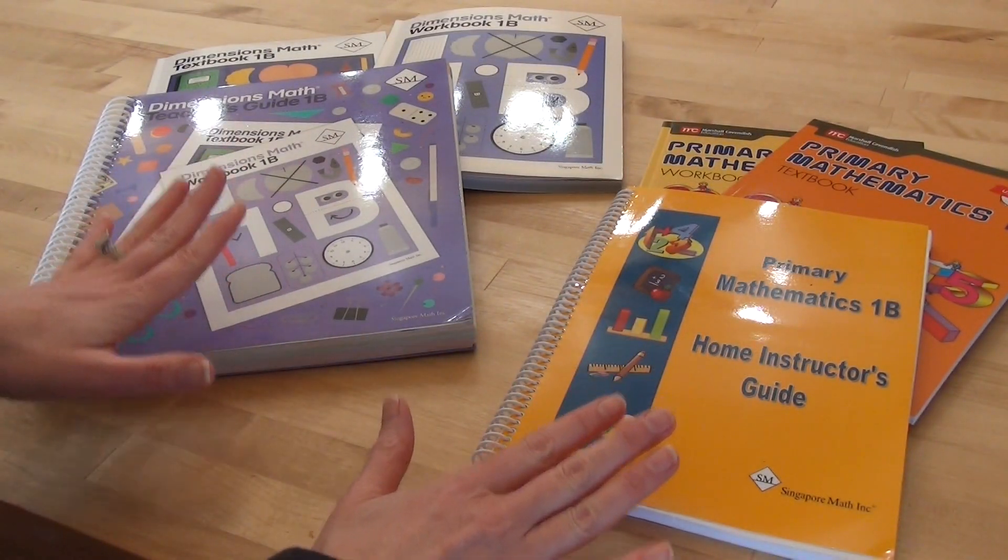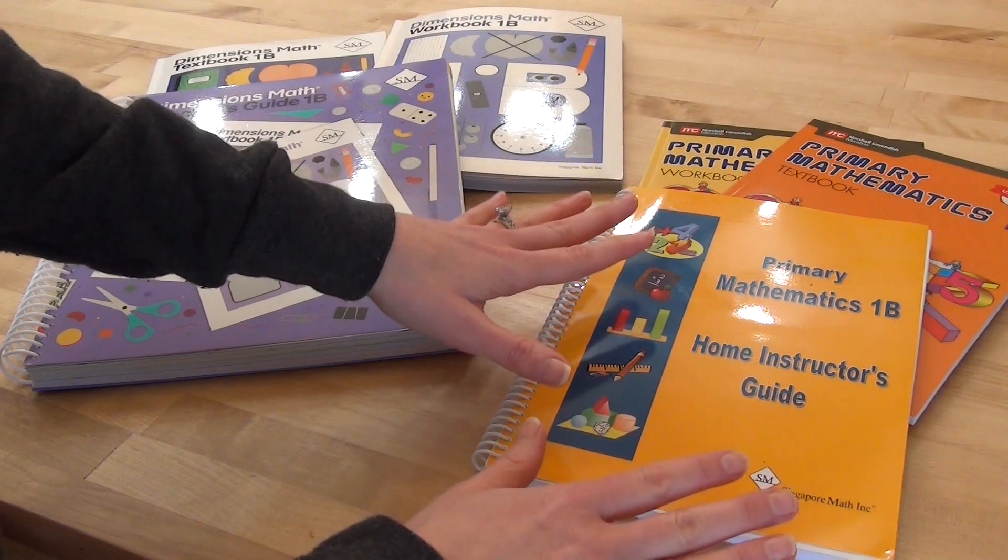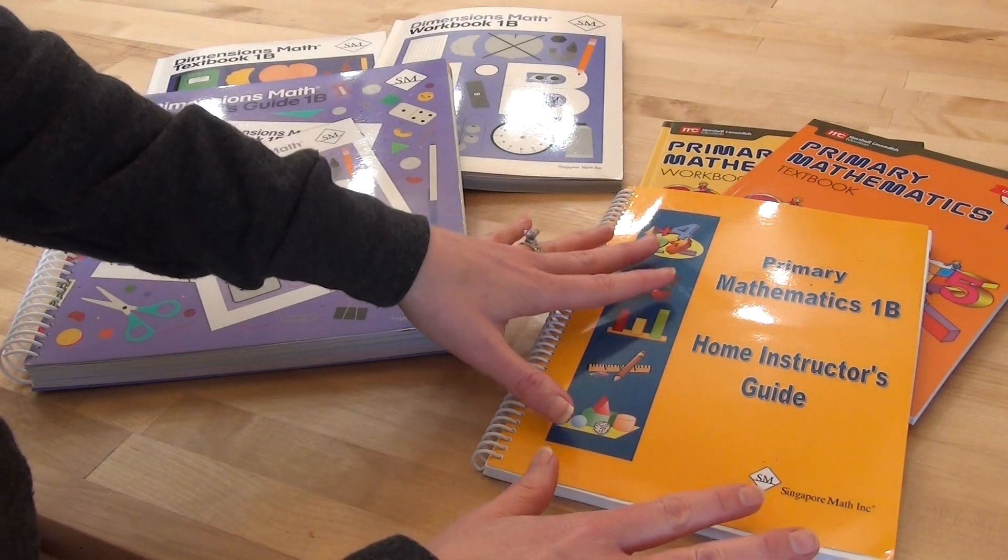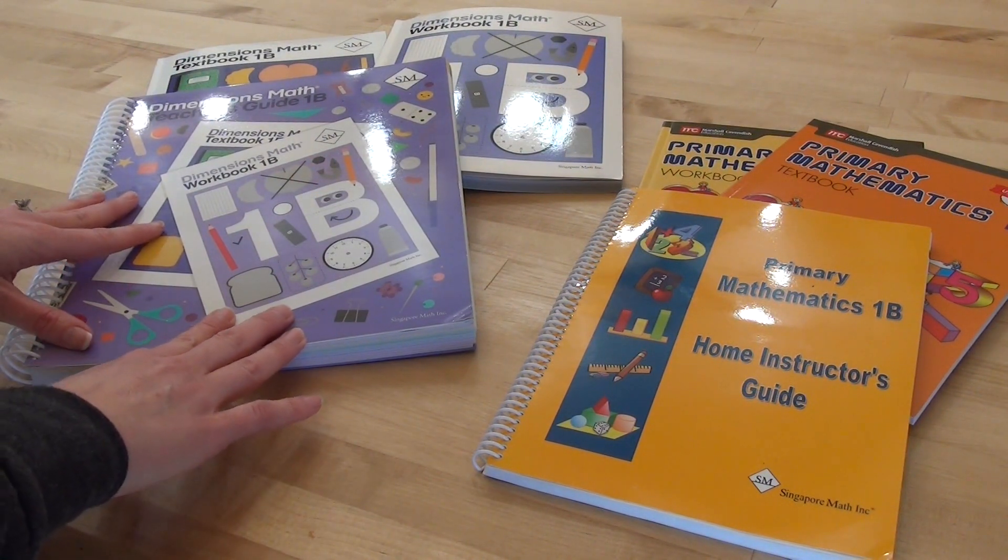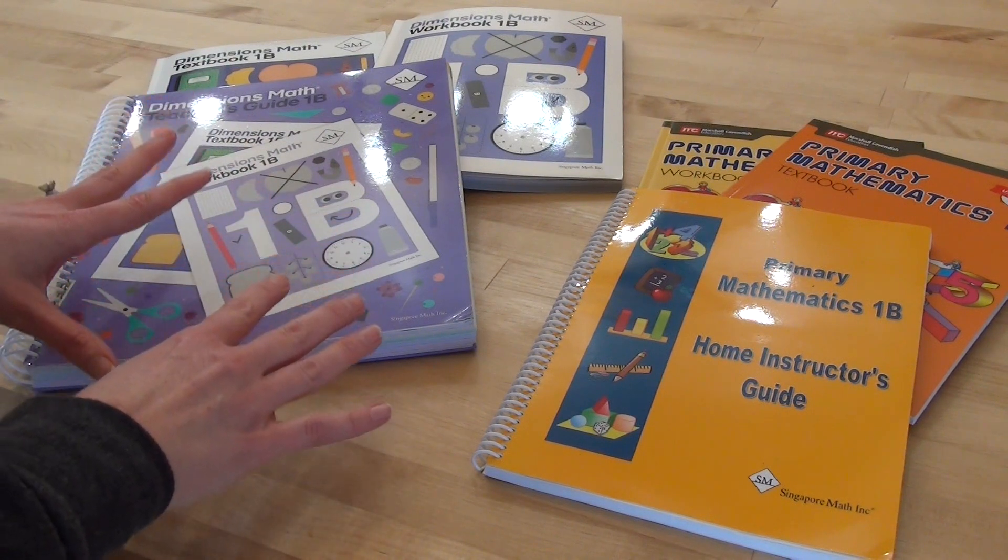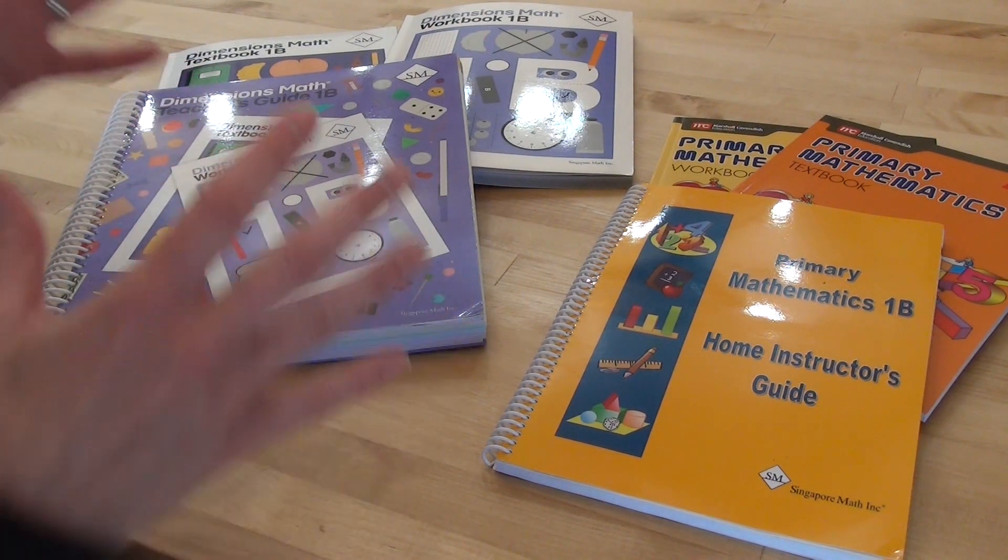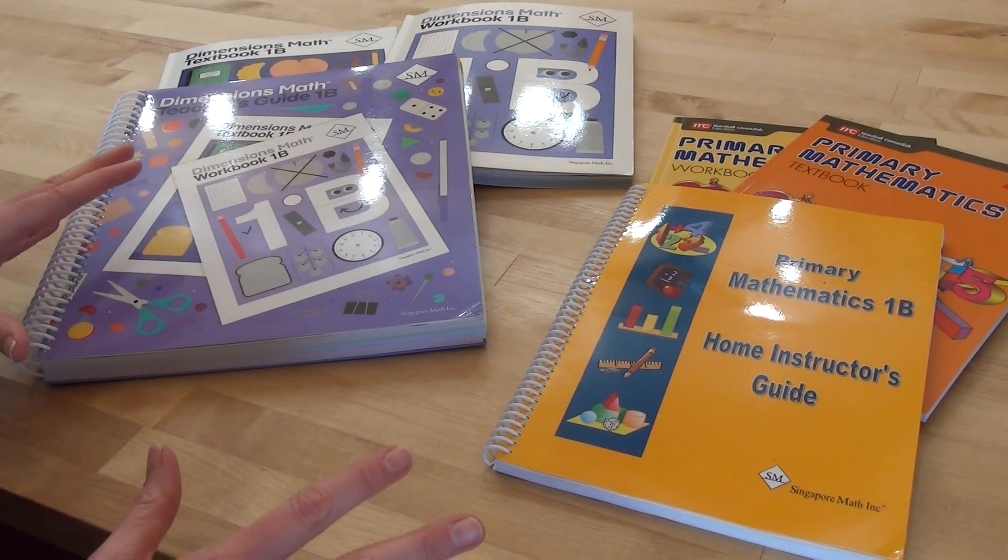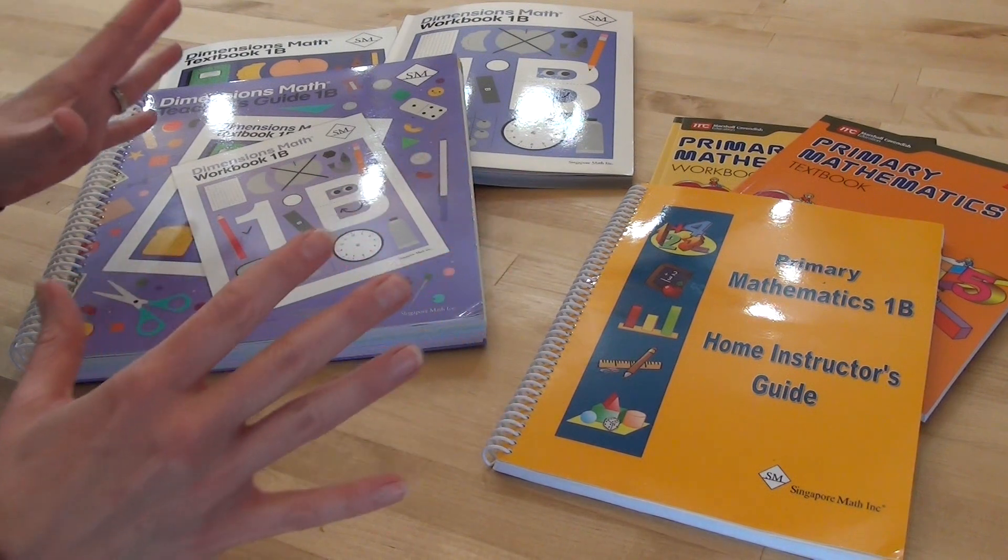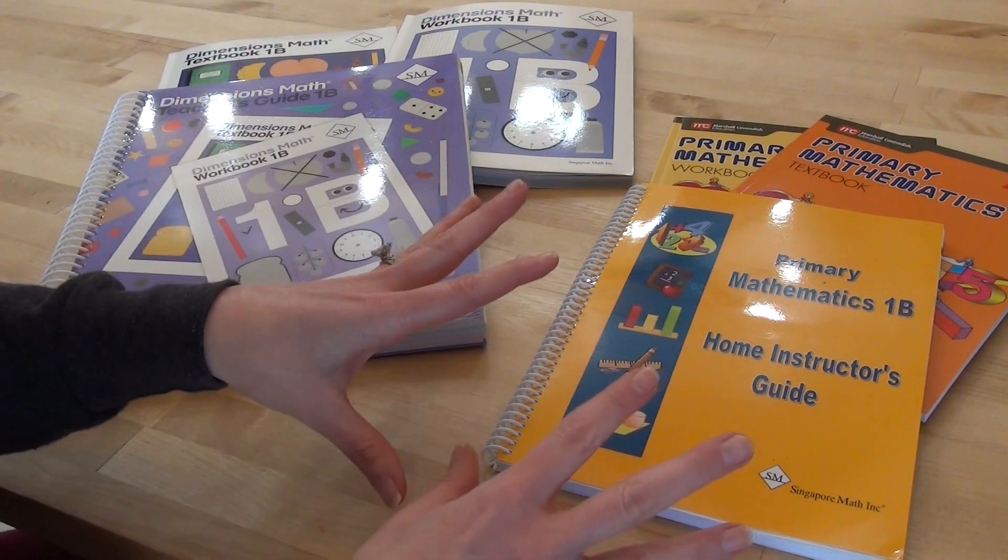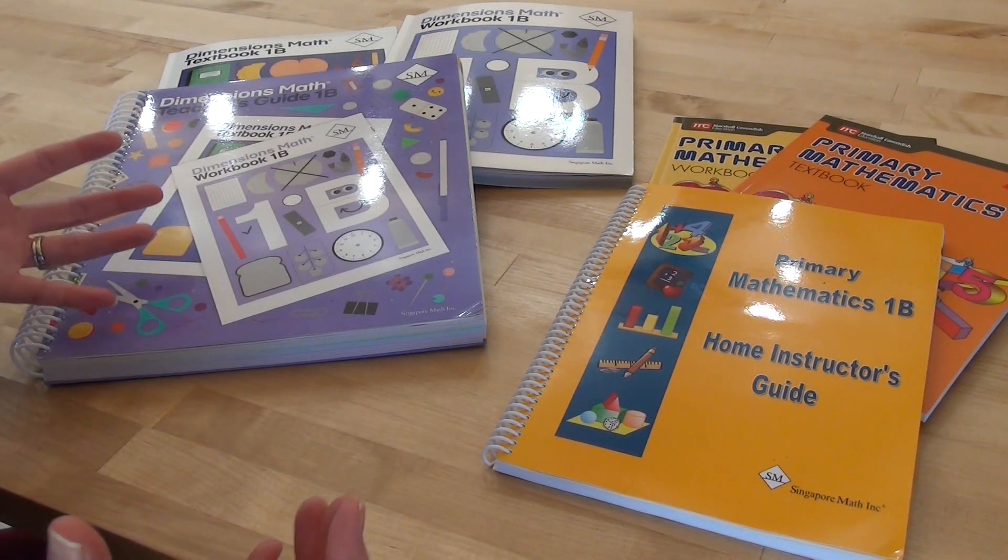These two programs are both Singapore math. One is Primary Mathematics which is the original Singapore math that came out for homeschool. Then we have Dimensions Math which is also Singapore math that is a newer release. This is going to be a shorter video because really I'm asking you to tell me what do you want to know. I'm going to compare these programs and one thing that I've seen a few comparison videos on is they're looking at Dimensions and Primary but usually it's different levels. To me that is comparing apples to oranges.